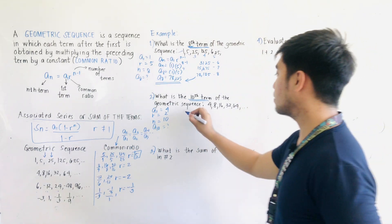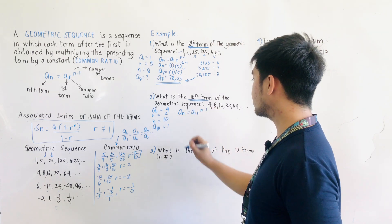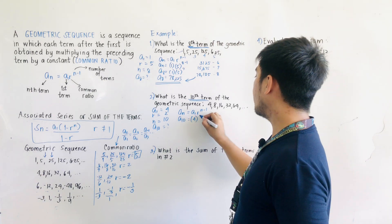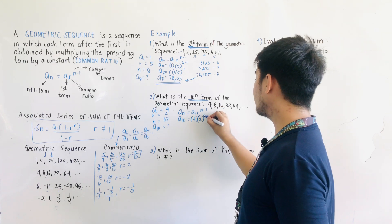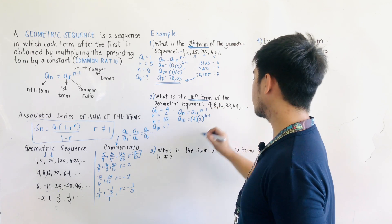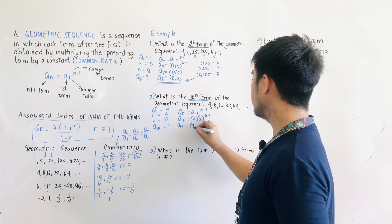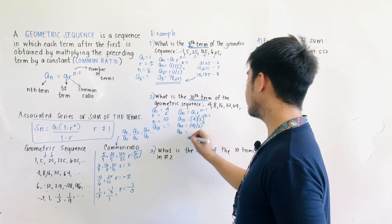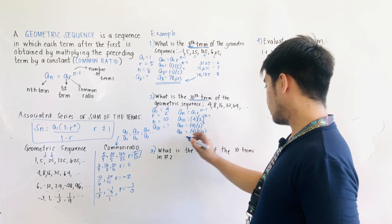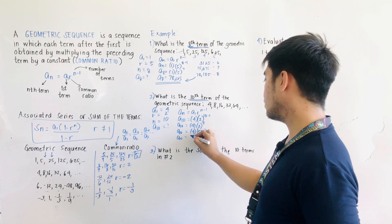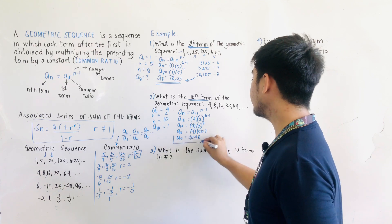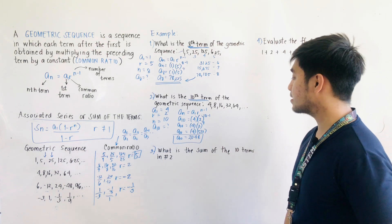Writing the formula: AN is equal to A1 times R raised to N minus 1. Substituting: A10 equals 4 times 2 raised to 10 minus 1, which is 2 raised to 9. 2 raised to 9 equals 512, and 4 times 512 equals 2,048. Therefore, the 10th term of the geometric sequence is 2,048.